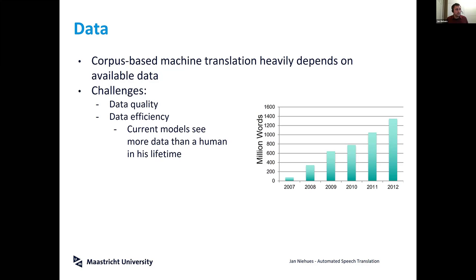The question is: how can we make these models more data efficient? If we look at the model, I want to give you a short overview of what is currently the state of the art.